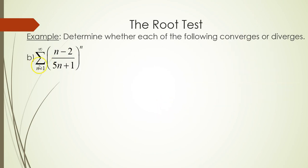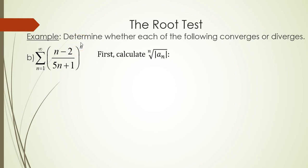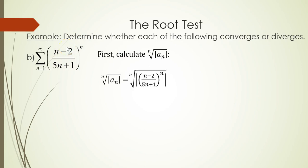For the second example, we're given the series from n equals 1 to infinity of the quantity (n minus 2) over (5n plus 1), all raised to the n power. Since we see that power of n, that's a good indication the root test will work. First, let's calculate the nth root of the absolute value of a sub n.